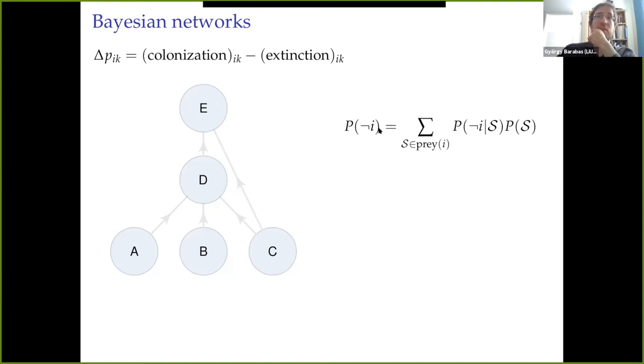The way we model this is we model the extinction probability of each species. We model P(not i), that is the likelihood that species i is not present in the community, as a function of all the possible combinations of its prey being present or not. Let me give you an example. Here is species D, so let's assume that i here stands for species D. It has three prey items, A, B, and C. We take a sum, using the law of total probability, over all the possible combinations of its prey items.